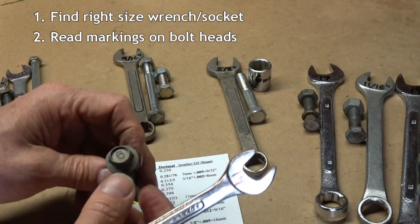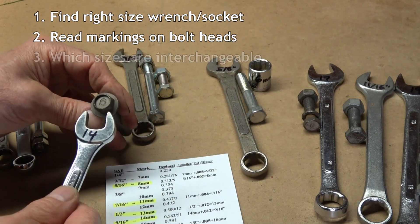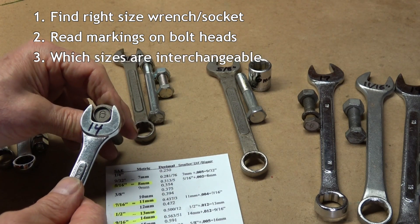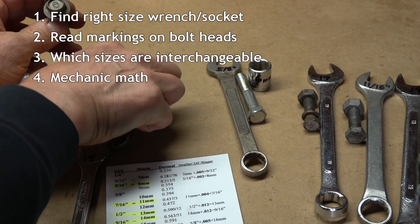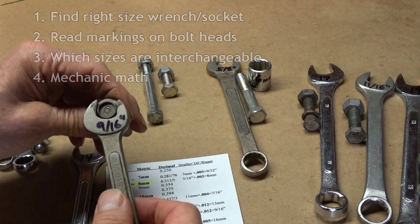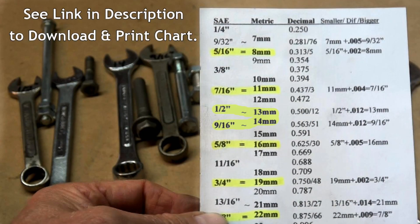Also, how to identify markings on bolt heads, which sizes are interchangeable, plus a little mechanic math. There's a link in the description to download a handy chart you can print on cardstock and keep in your toolbox.